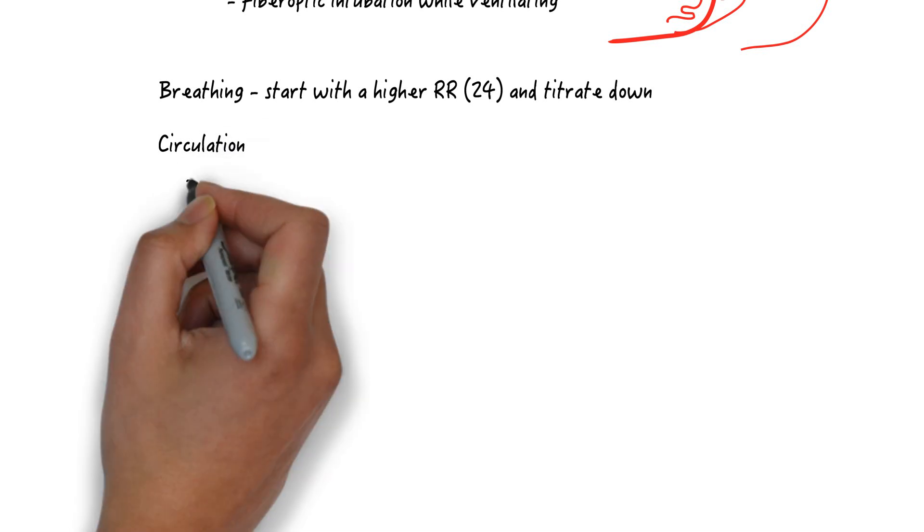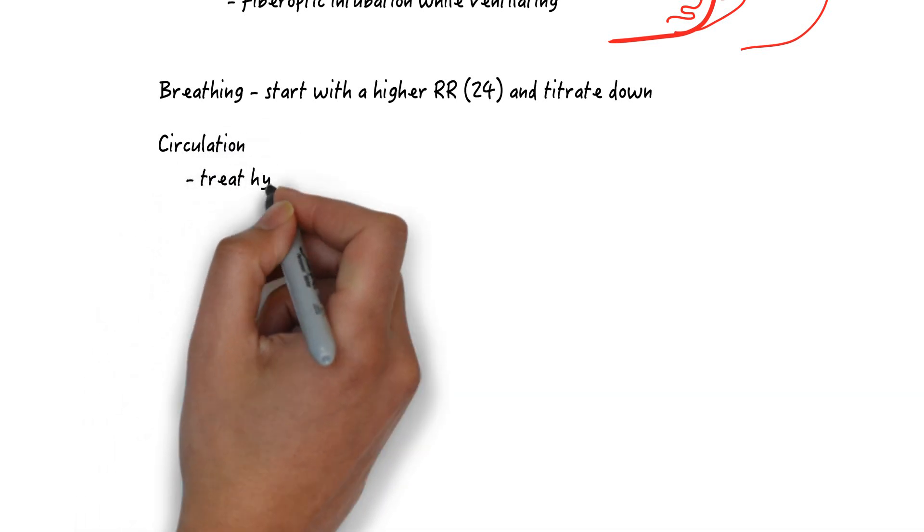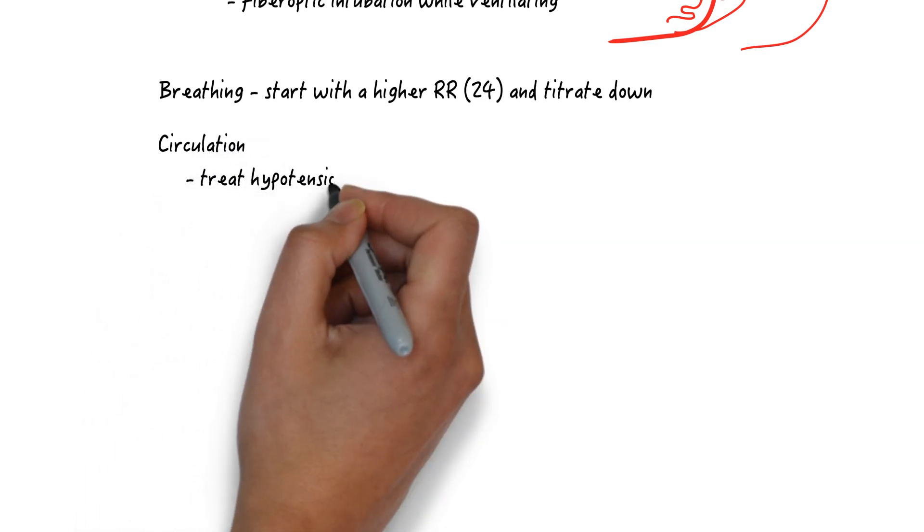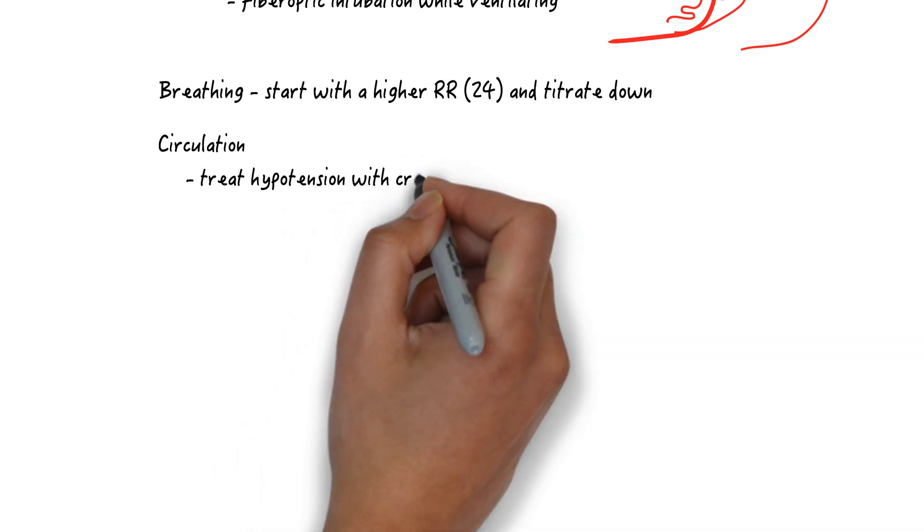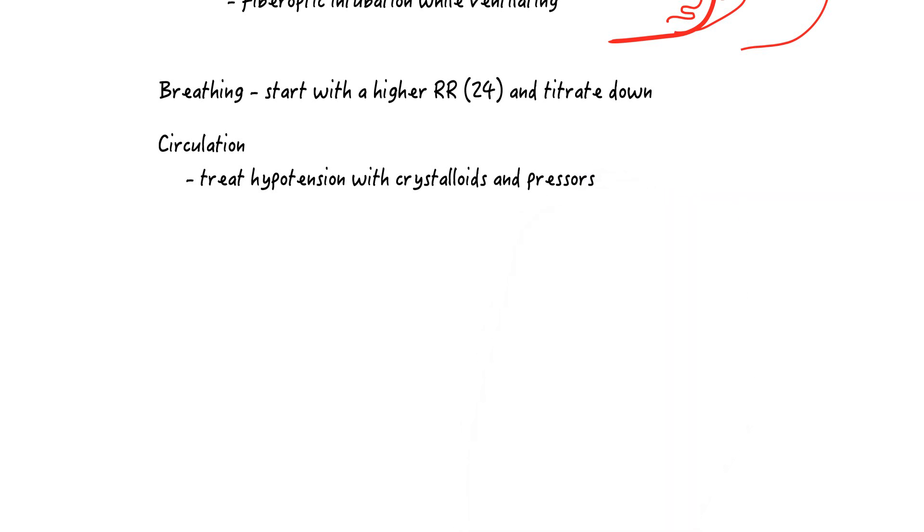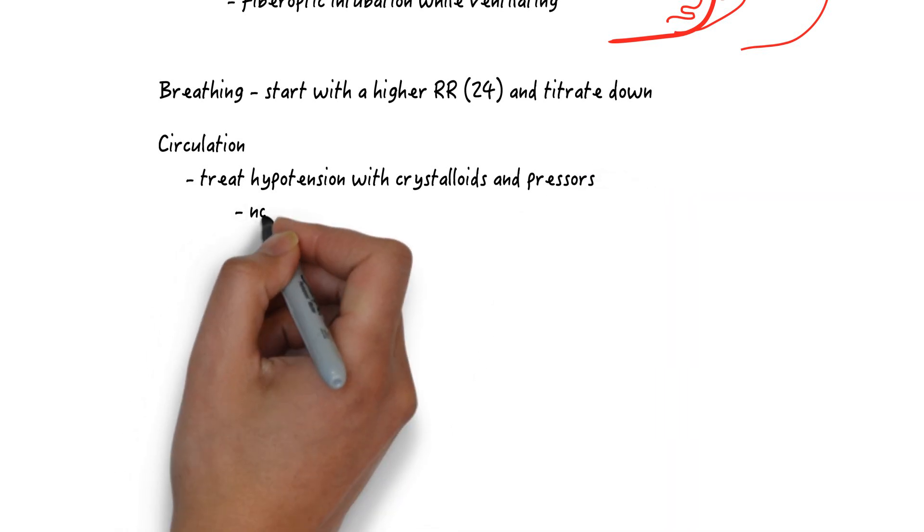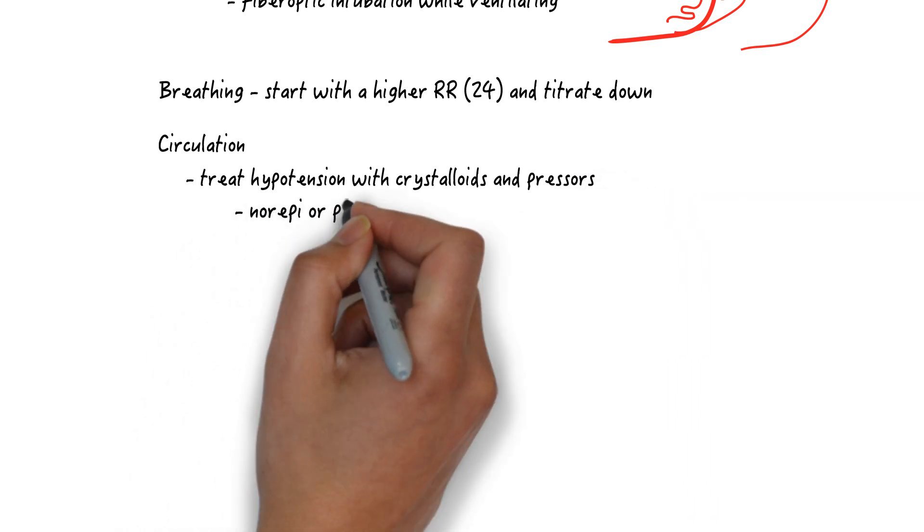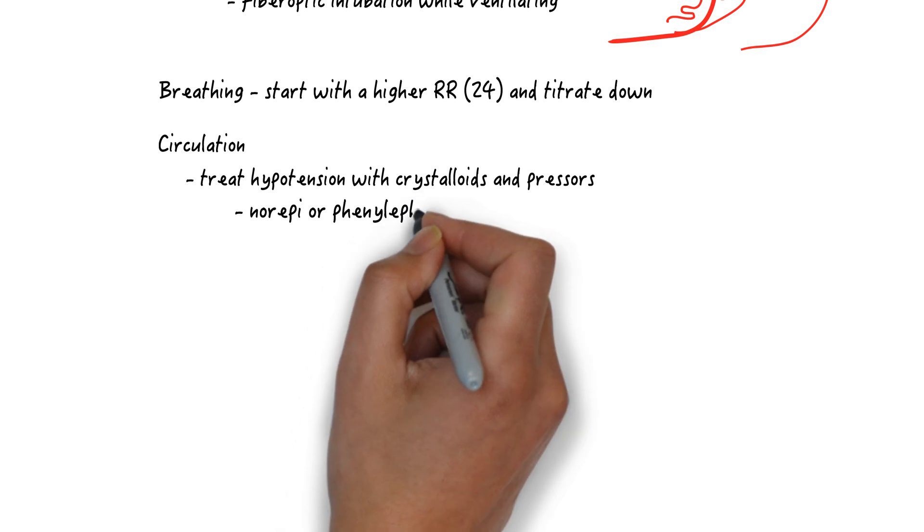For circulation, give fluids for hypotension, but remember that normal saline is acidotic. Also, these patients are not in a fluid deficient state and they will likely receive an enormous amount of hypertonic sodium bicarbonate, which will increase the intravascular volume. Go to pressors early for hypotension.